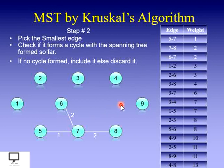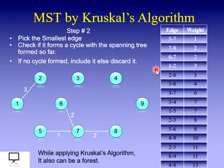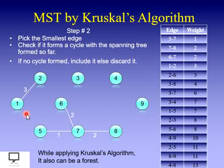Next edge is 1–2 (or 2–1, as it is an undirected graph) with weight 3. It is not forming any cycle, so include it. Next edge is 2–6 — also not forming any cycle, so include it. At this point the graph is unconnected, which is also called a forest. Kruskal's algorithm can form a forest during intermediate steps, but the end result will be the minimum spanning tree, so don't worry.